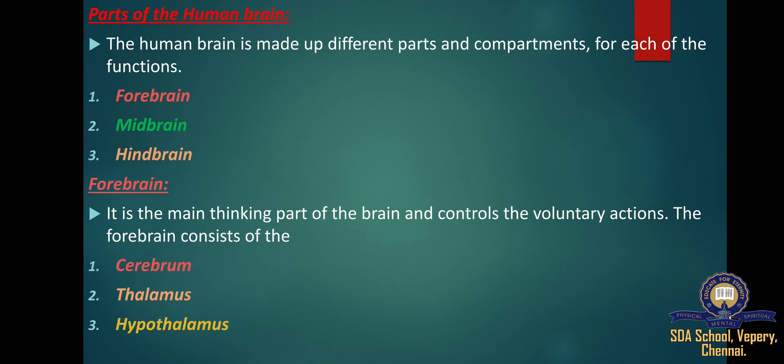The forebrain processes sensory information collected from the various sense organs such as the ears, eyes, nose, tongue, and skin. It is because of the forebrain that humans are placed at the highest level in the animal kingdom. The forebrain consists of the cerebrum, thalamus, and hypothalamus.